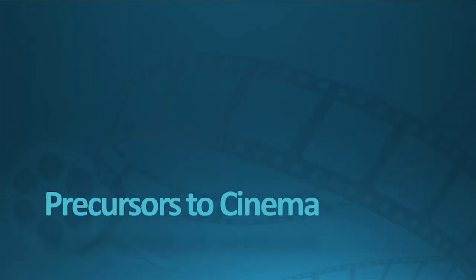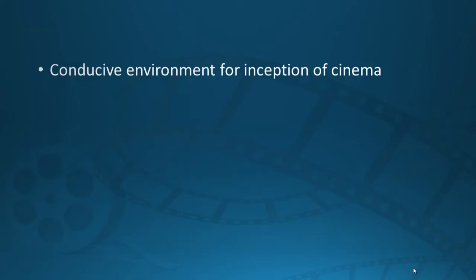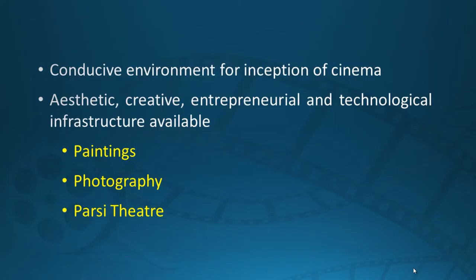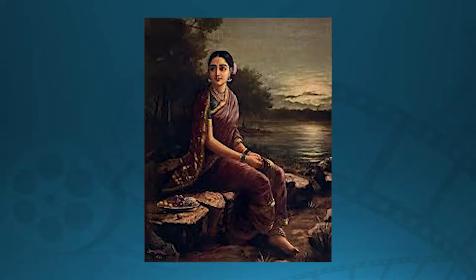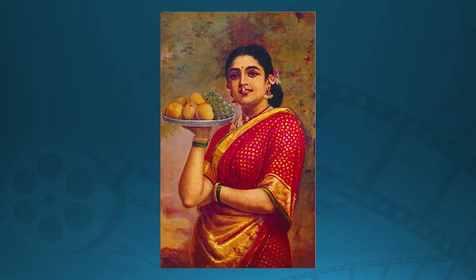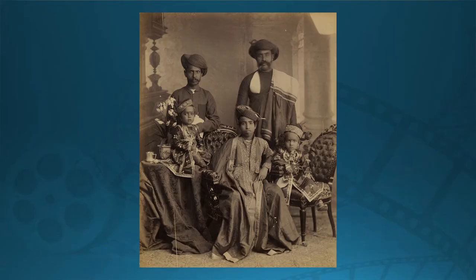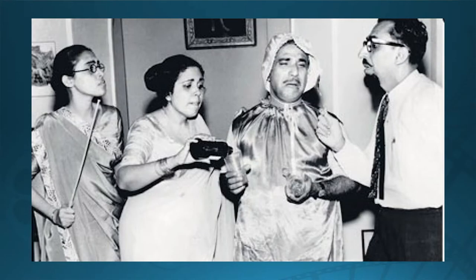Now let us start talking about how cinema in India actually started — the precursors to Indian cinema. By precursors I mean the different art forms that were already existing when cinema came along, because these existing art forms had a very defining role in the makeup of cinema as we know it today. The environment that existed in India when cinema came to be was actually very conducive to it. Specifically, three important art forms impacted cinema: paintings, photography, and the Parsi theatre.